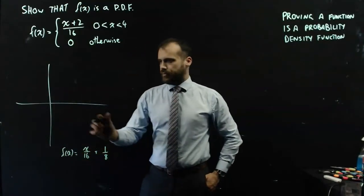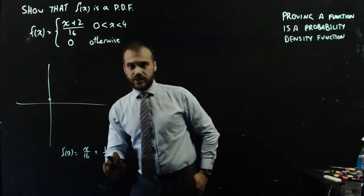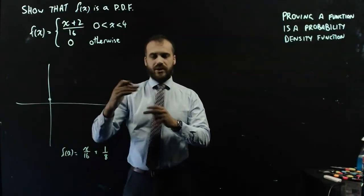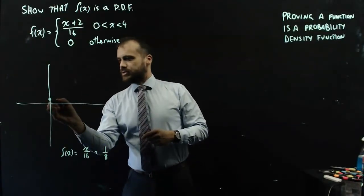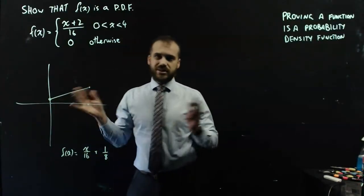Now what does that mean? It means that it starts here at, it has a y-intercept of 1 eighth, and x on 16, it's a gentle slope, a 1 on 16 slope, and it looks something like that. Now, I don't know what that particular value is, I don't really care.